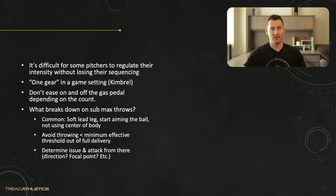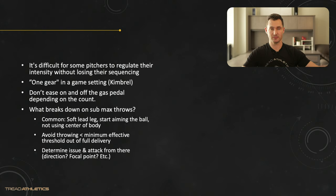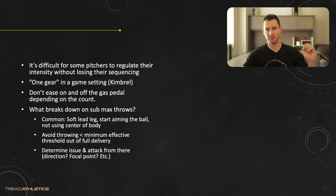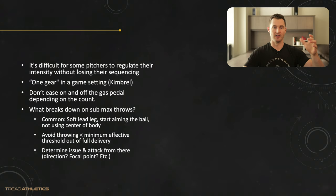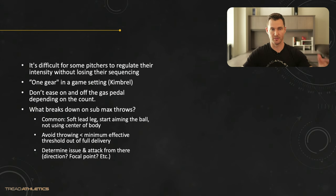For these guys, I definitely recommend having one gear in-game. Craig Kimbrell is a great example — every single fastball is 97, nothing under 96, nothing over 98. That one gear eliminates the additional variable of how to dial intensity. Verlander could cruise at 95 and dial it to 99 when he wanted, but that takes a lot of feel. It's simpler to just have one gear, especially as a reliever — throw hard, get out, and don't vary pitch intensity by count.